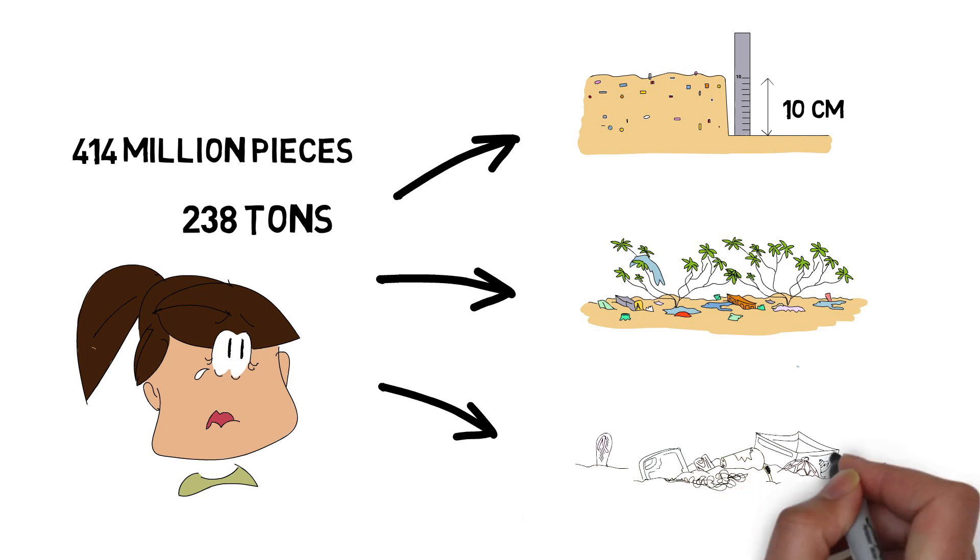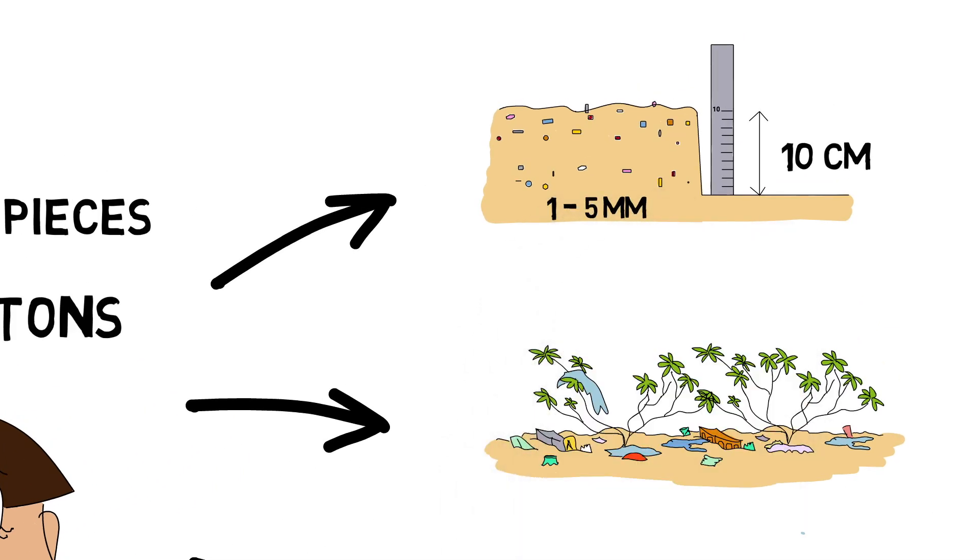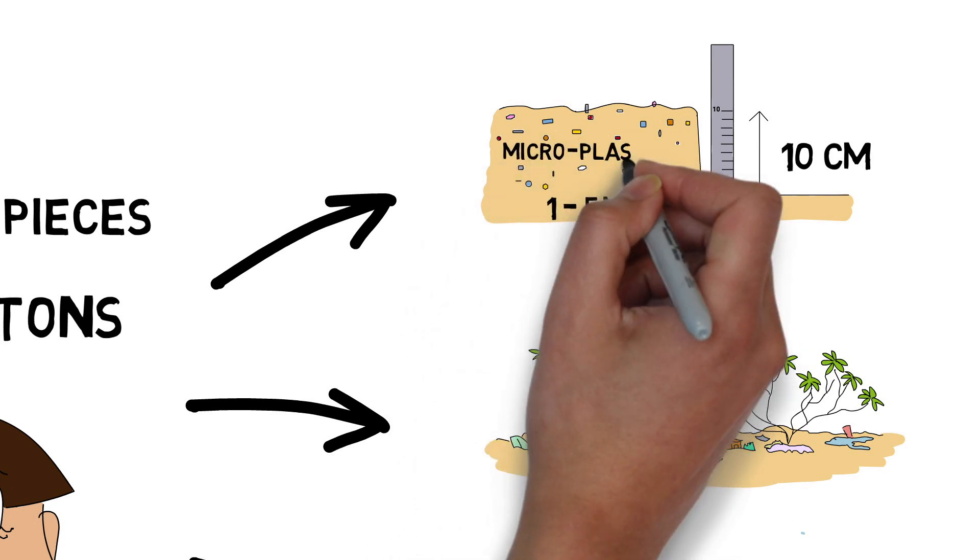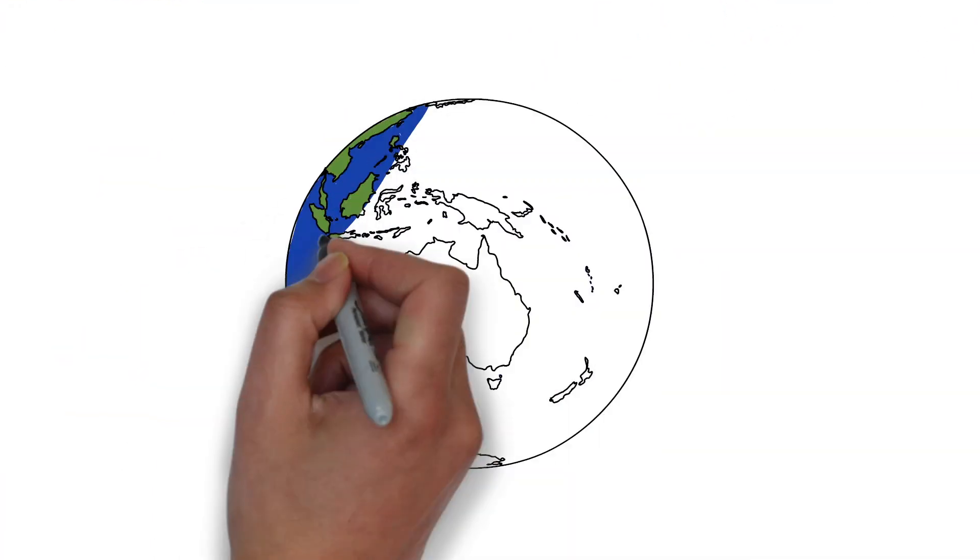32% of items originated from single-use plastics, and 60% of them were very small. Scientists call these plastic bits, between 1 and 5 millimetres in size, microplastics.